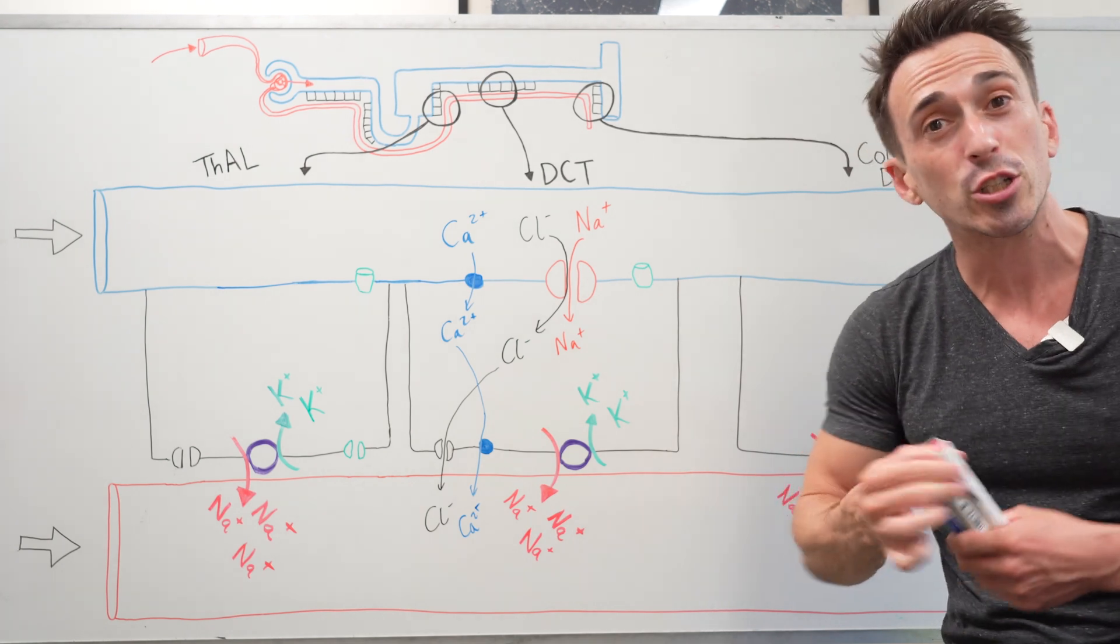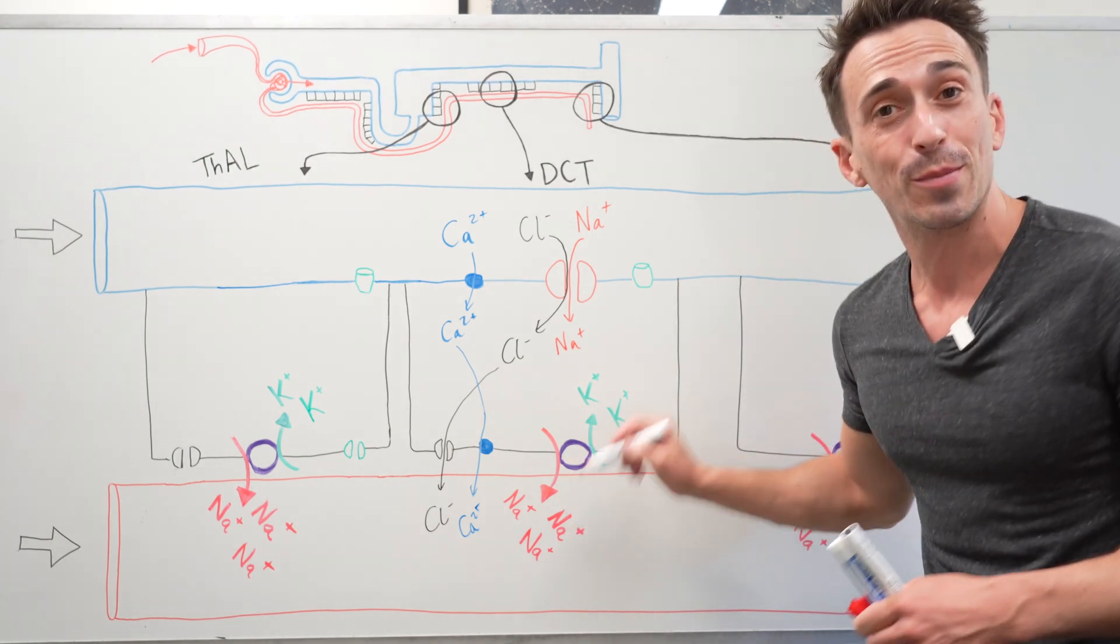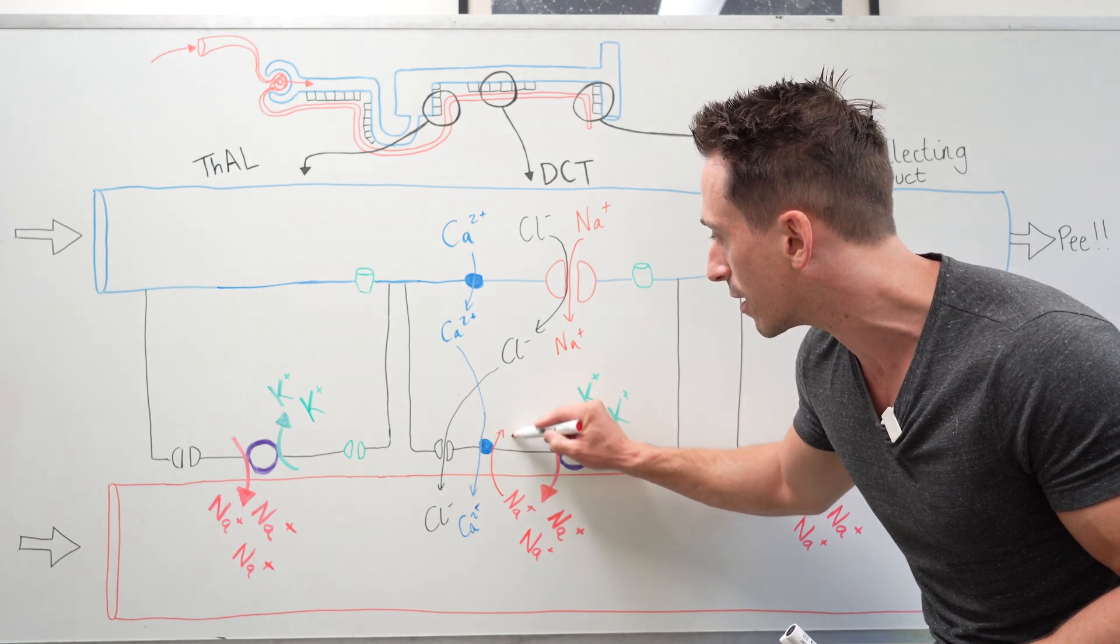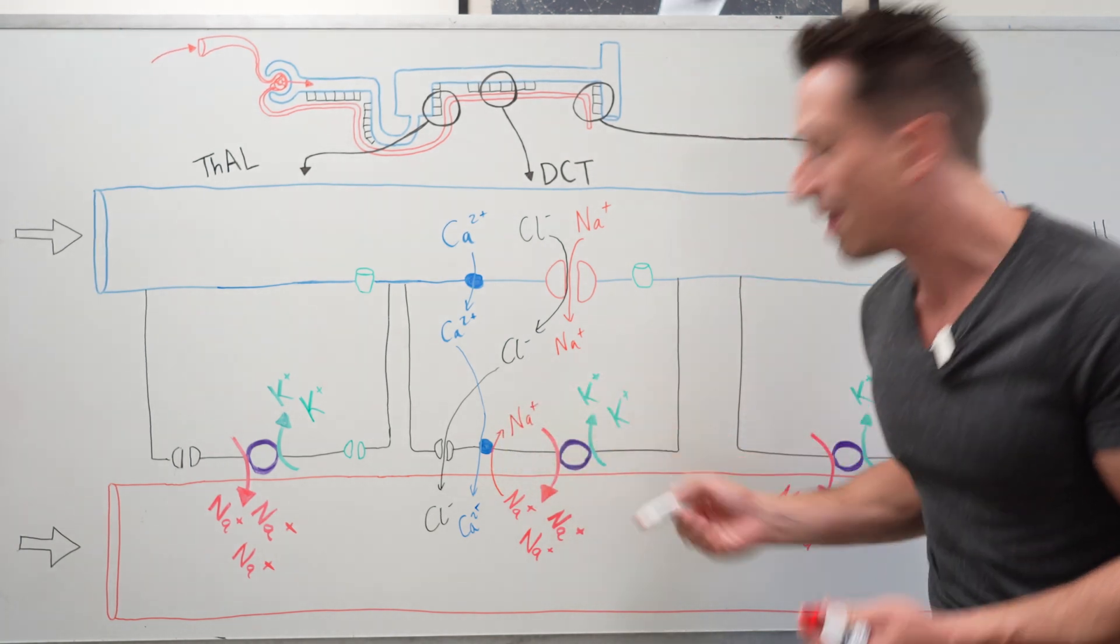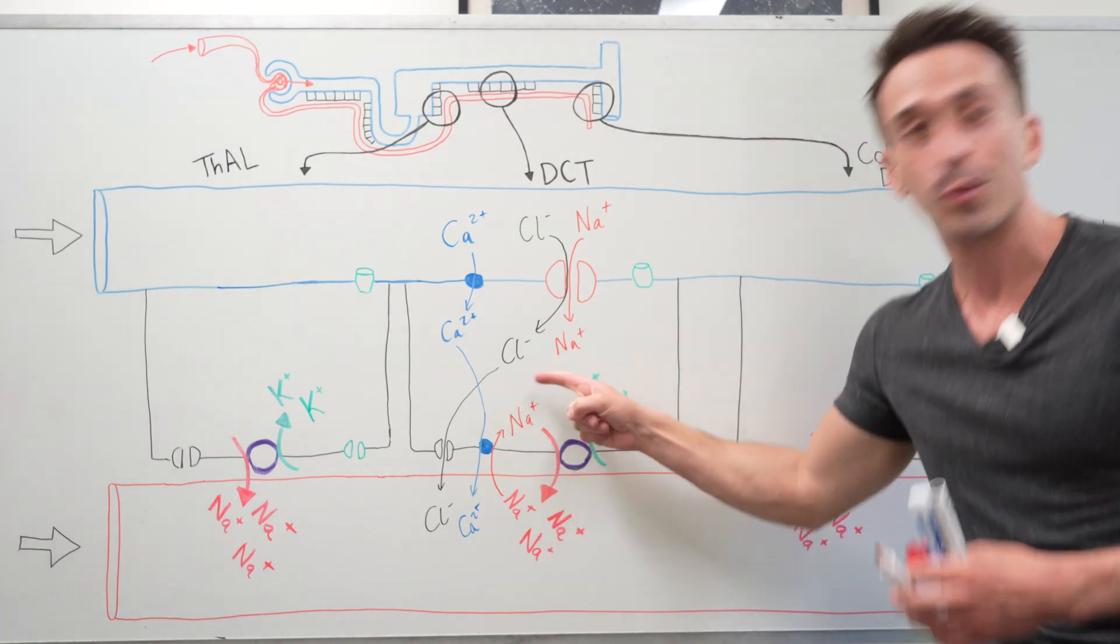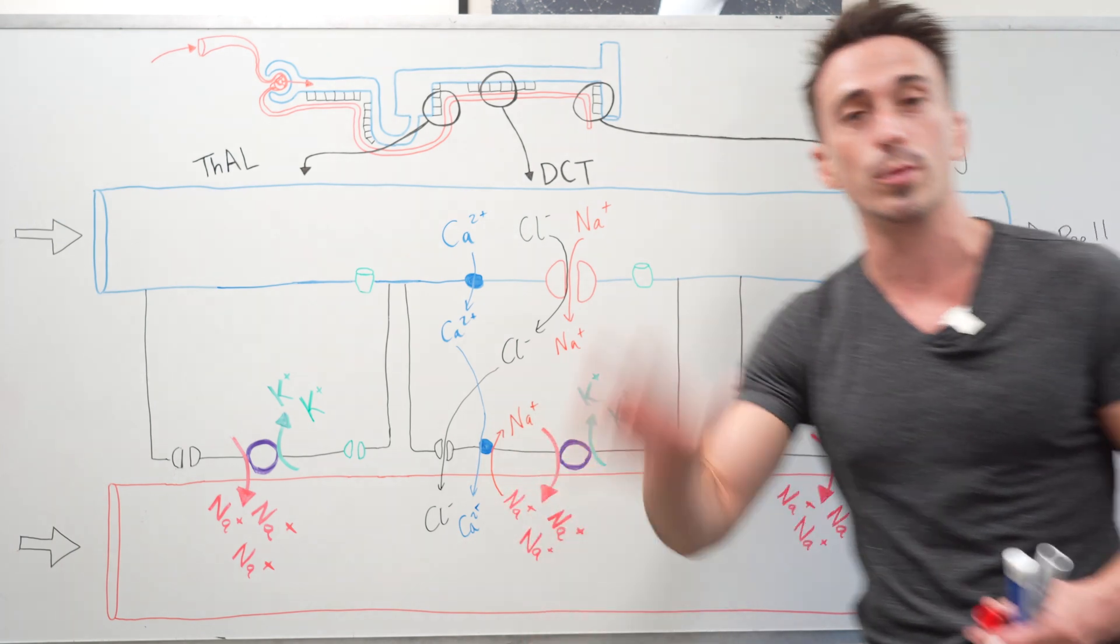And it does this by actually swapping with sodium that's in the blood. So that sodium that's in the blood gets thrown back into the cells of the distal convoluted tubule. And then that sodium can be swapped again for the sodium potassium pump, going in, going out, going in, going out, but allows for calcium to be reabsorbed.